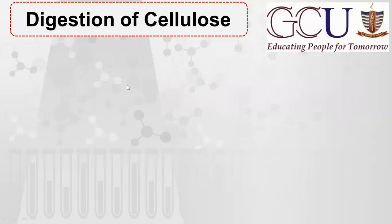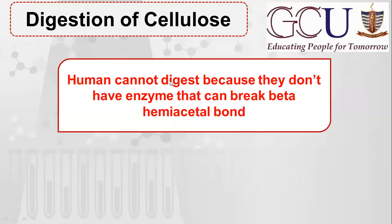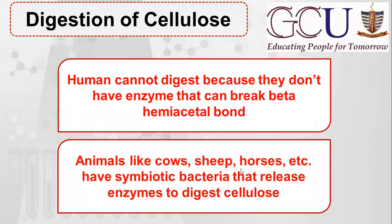The next idea is the digestion of cellulose. Humans cannot digest cellulose because our body lacks an enzyme that can cleave the beta-hemiacetal bond — that enzyme is cellulase. Animals like sheep and horses have symbiotic bacteria that release cellulase, which digests the cellulose. Ruminants have these symbiotic bacteria; humans do not have this enzyme in the body.